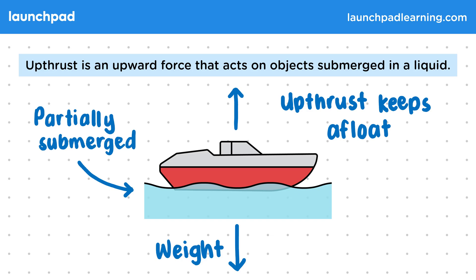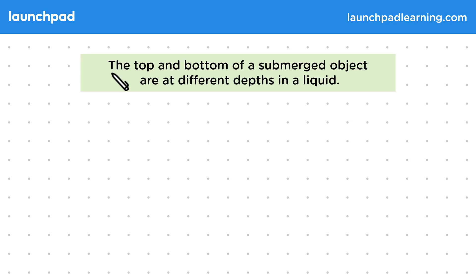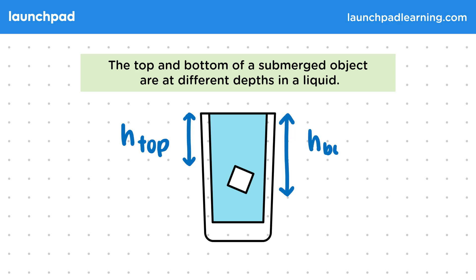So what causes this upthrust and what exactly does it have to do with fluid pressure? Well, the top and bottom of a submerged object are at different depths in a liquid. For example, consider some ice submerged in water. The water just above the ice is higher up than the water that sits below the ice. But what does this tell us about the pressure at these two points?